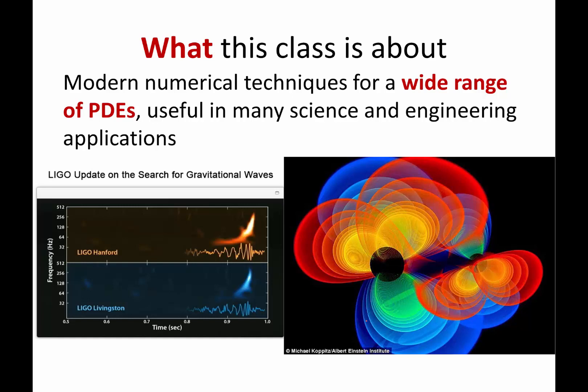This is one of the situations where LIGO — how many people have heard of LIGO? Most of you, good. LIGO — I think LI stands for laser interferometer, and GO stands for gravitational wave observatory. Basically, people are observing and testing a hypothesis Einstein posed many years ago: that there exists something called gravitational waves.